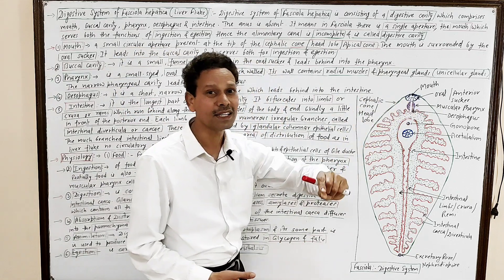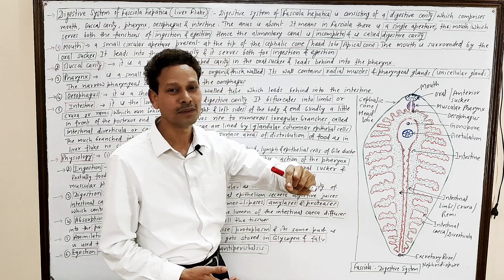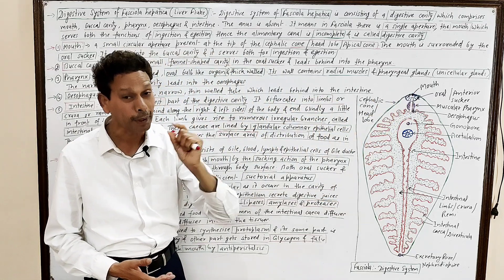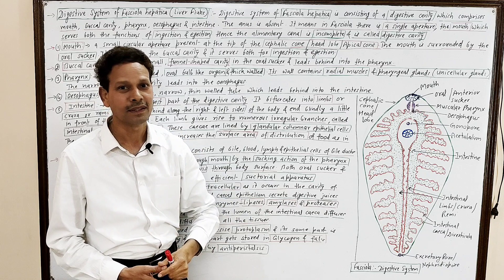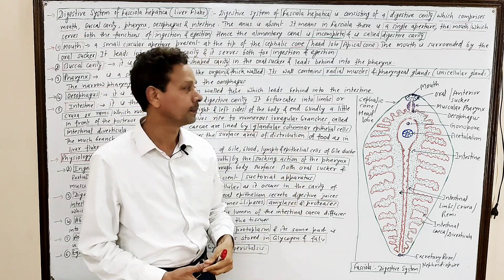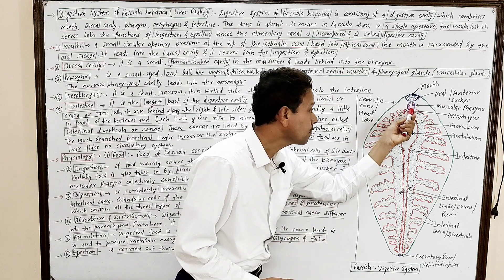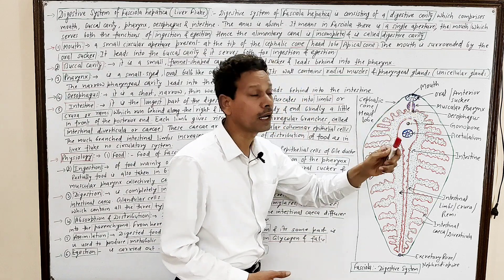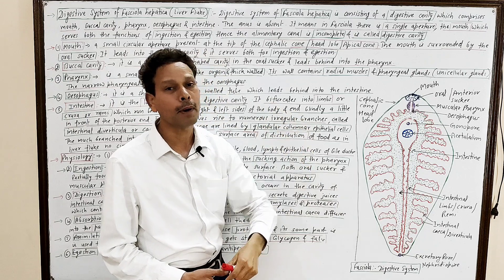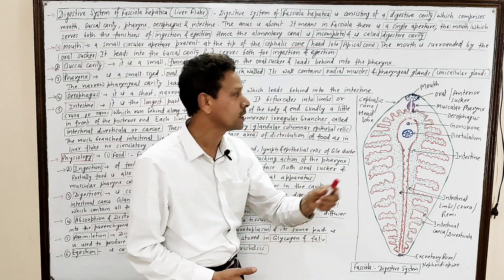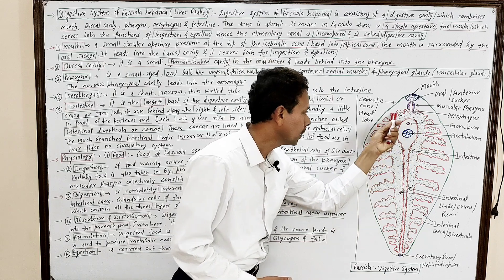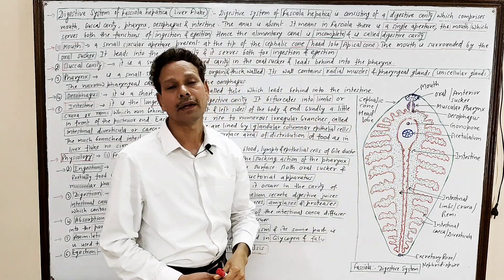The pharynx and mouth collectively constitute a sectorial apparatus for the ingestion of food. The next part of the alimentary canal is the esophagus, which is a very small tubular, thin-walled structure. The esophagus leads behind into the intestine.